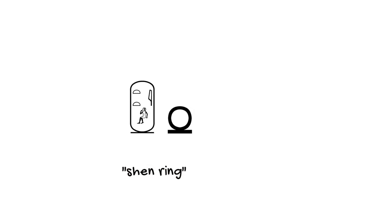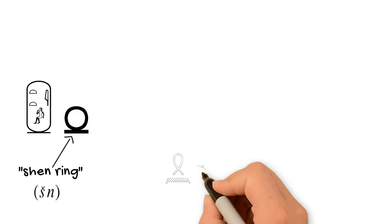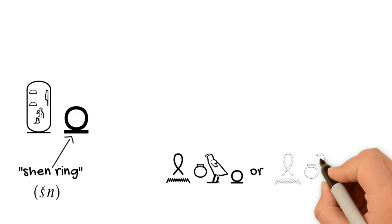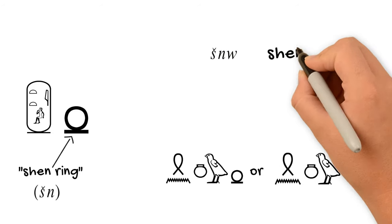Today, we call this a shen ring because it can be used as a logogram or determinative in the word shenu, which means circuit, ring, circle, or to-in circle.